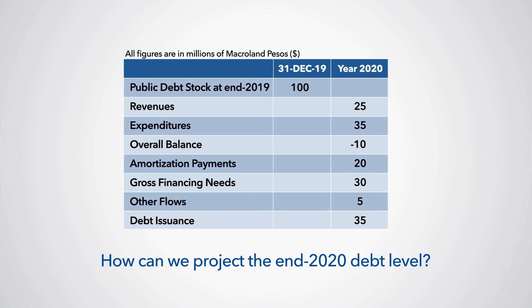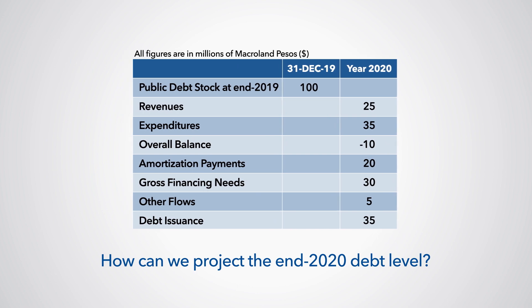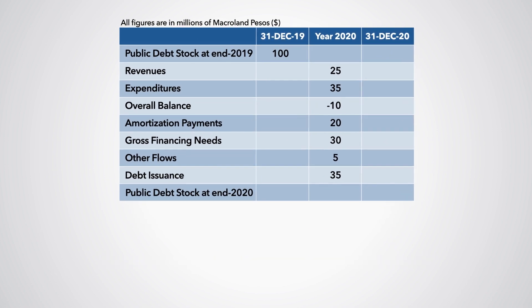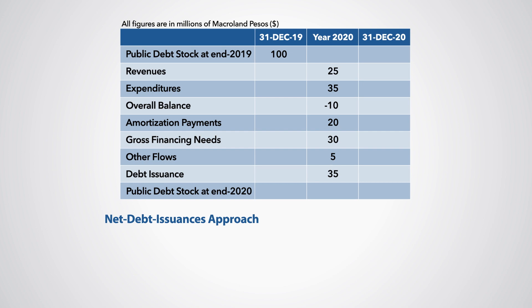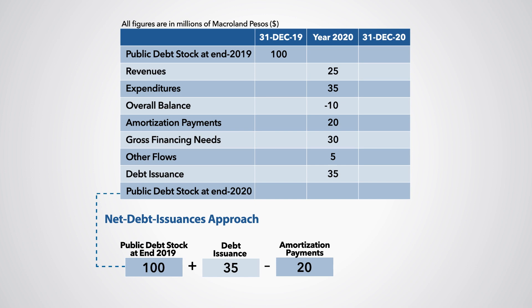How can we project the 2020 debt level? With the information provided in the table, we can use two equivalent approaches. First, following the net debt issuances approach, the 2020 debt stock equals the 2019 debt stock of 100 million, plus debt issuances of 35 million, minus amortization payments of 20 million. Therefore, the 2020 debt stock is projected to be 115 million Macroland pesos.